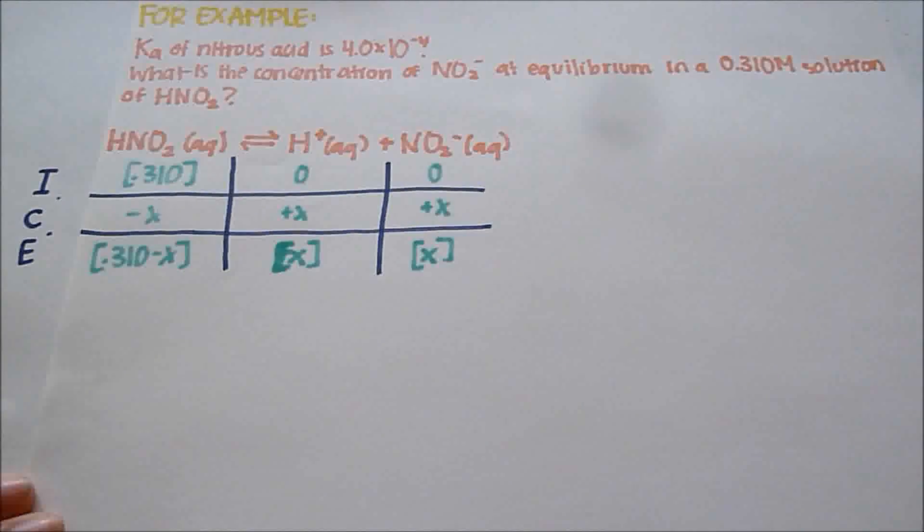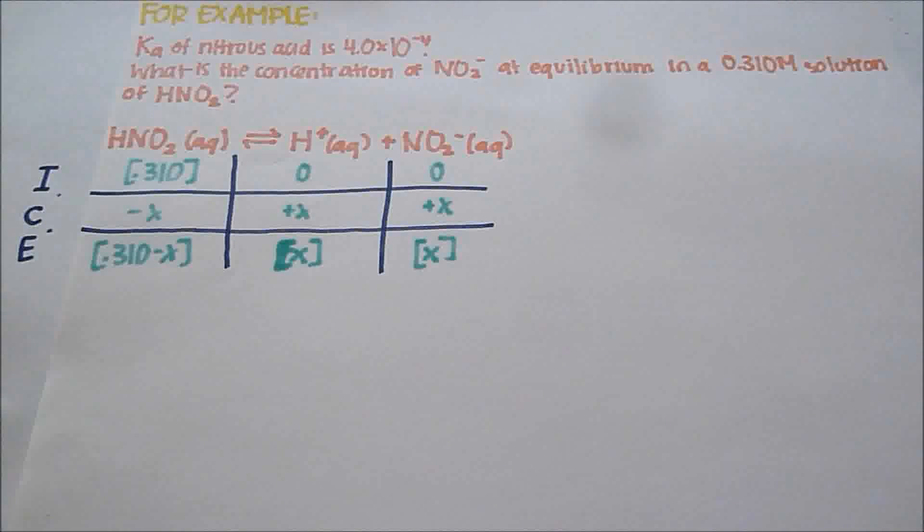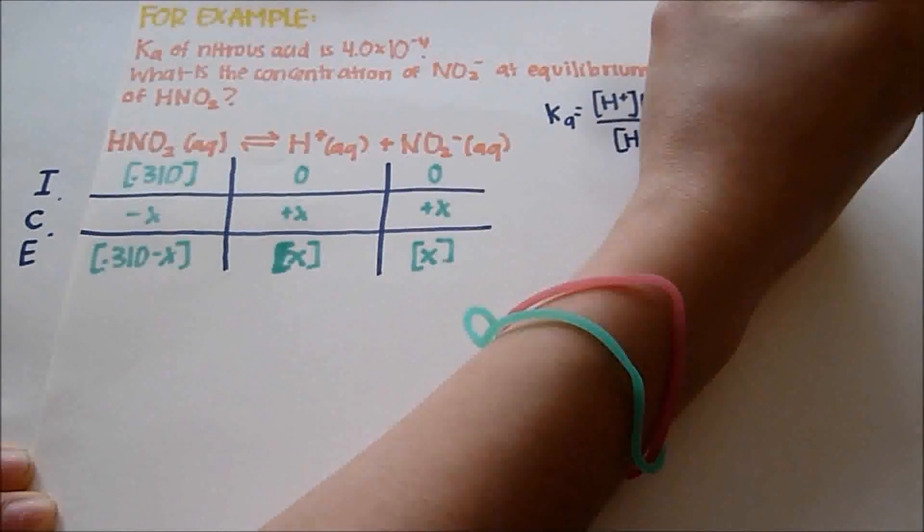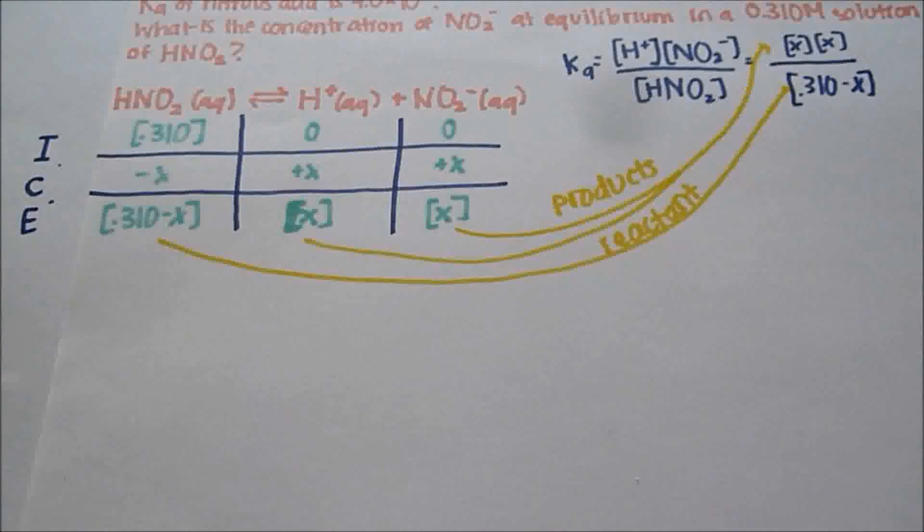For the equilibrium change, we're going to take the initial and add the change. But because the change is negative for HNO2, it's going to seem like we're subtracting. Next, we're going to take the equilibrium expression and plug in the E values, just like that.